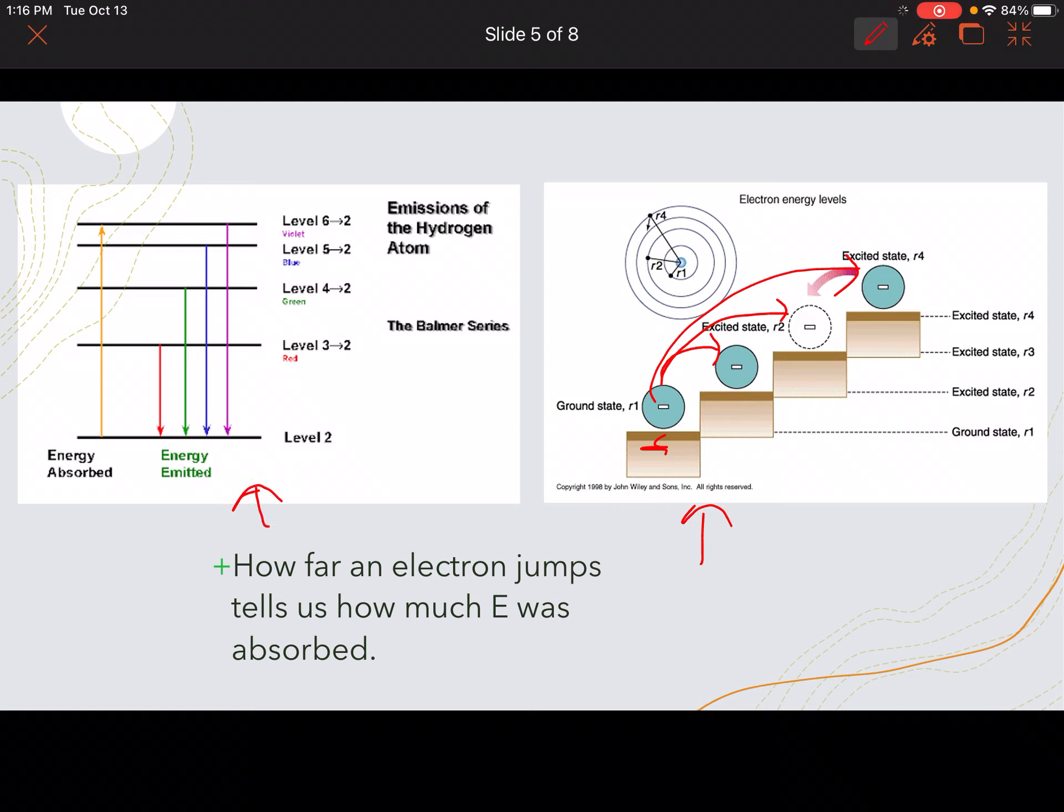So energy absorbed, as you can see, we go all the way up to the top here. But then when it falls down, if we're falling right from the top to the bottom, that's our violet. That's high energy. And then we've got our blue, green, red. So those are linked to the energies. Because remember, our ROYGBIF, we've got energy as we move from the red. Energy is increasing as we move from our red to the violet.